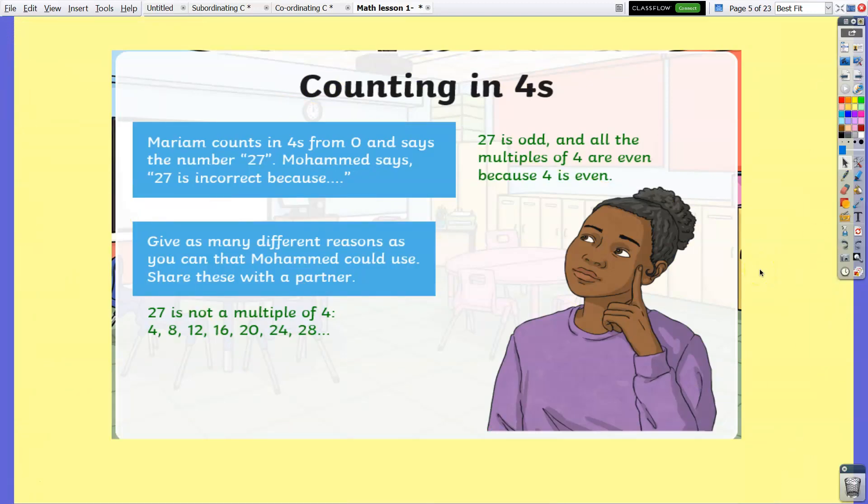Counting in 4s. Mariam counts in 4s from 0 and says the number 27. Muhammad says 27 is incorrect. Why? Because 27 is odd and all multiples of 4 are even, because 4 is an even number. Also, 27 is less than 4 when you are counting, because after 24 is 28.